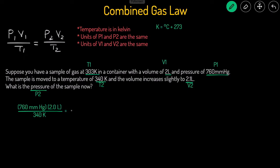Then that's going to equal P2, that's what we're trying to solve for, because it's asking us what's the new pressure. Volume 2 was 2.1 liters. And then temperature 2 is 340 degrees Kelvin. Well, my mistake. Temperature 1 is 303 degrees Kelvin.